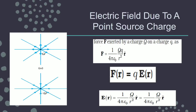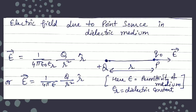If the source charge is kept in some medium, take care of the dielectric constant. Multiply the denominator by εᵣ, which is the dielectric constant (also written as k). So the expression for electric field becomes: E = (1/4πε₀εᵣ) × Q/r² × r̂. If the permittivity of the medium is given as ε, then the whole expression can be written as E = (1/4πε) × Q/r².